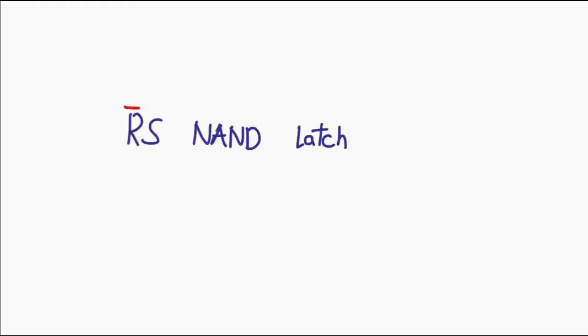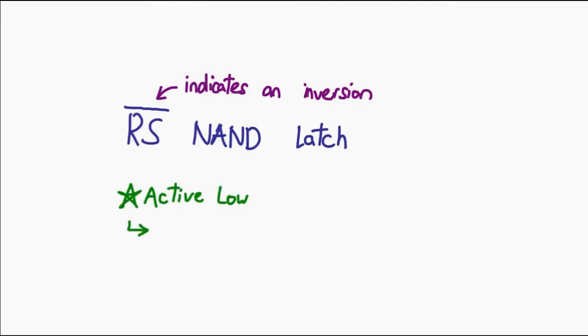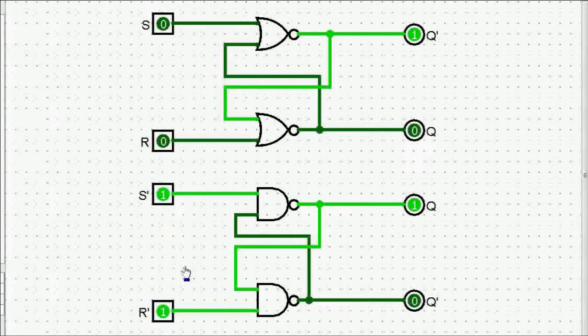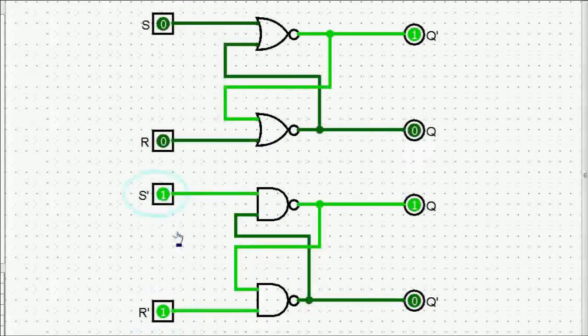We've looked at the RS NOR latch — how it works, why it works, and where its limitations are. Now let me introduce a different RS latch: the RS NAND latch. An RS NAND latch is written with a little bar at the top of the letters R and S, which stands for inversion. For an RS NAND latch, the inputs are what we call active low, meaning to send a set or reset signal you have to input a zero on the relevant line instead of a one. Also note that the outputs are now in inverted positions — the inverted output is now below, while the actual one is on top. You can imagine the RS NAND latch to be just completely opposite to the RS NOR latch.